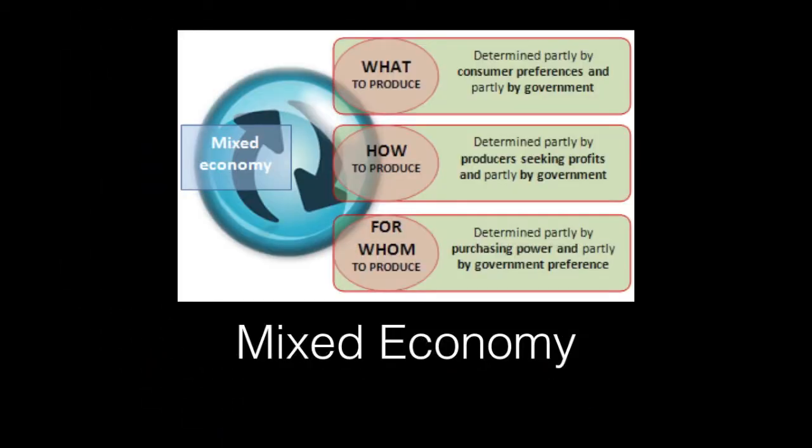The third type of economy we want to focus on is a mixed economy, and this is currently what's taking place in China. In this type of economy, the government and private citizens make business decisions together. Since the 1970s, China has practiced this type of economy. They even created special economic zones where foreign industries could come in and own companies within China's borders — prior to 1970, that was unheard of.